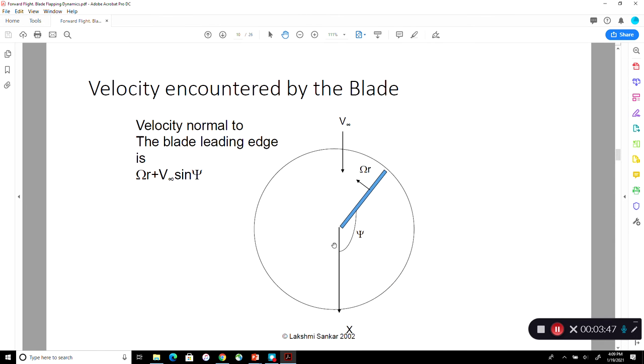So we first start with a typical blade section. It's spinning at a velocity of omega r. But we have to add a free stream velocity. So when the blade is right to the pilot's right at 90 degree azimuth, it's omega r plus v infinity. When the blade is to the pilot's left, it's omega r minus v infinity because psi is 270 degrees. When psi equal to zero or psi equal to 180, it does not participate. So this is the velocity normal to the blade leading edge that we see.